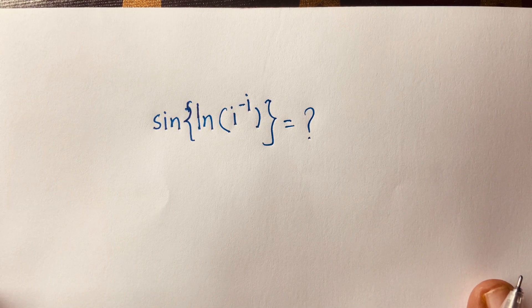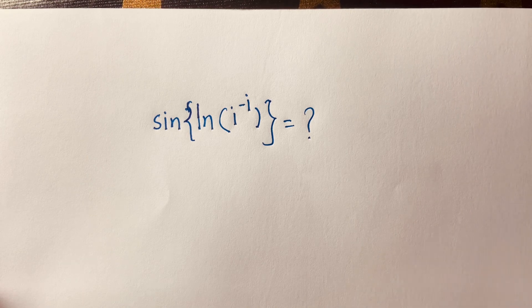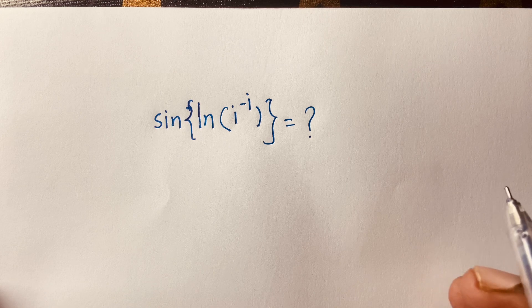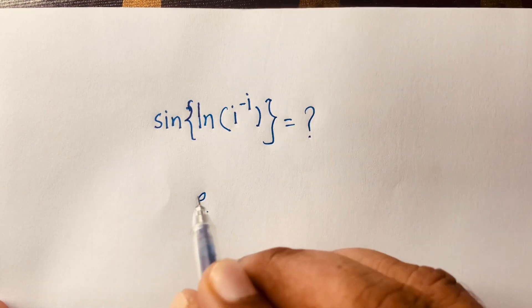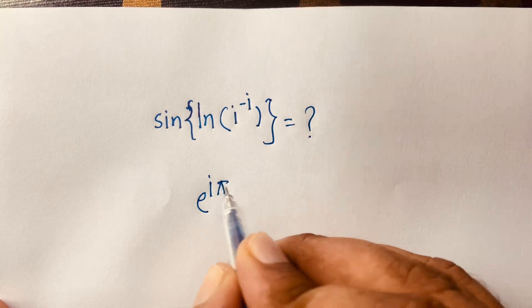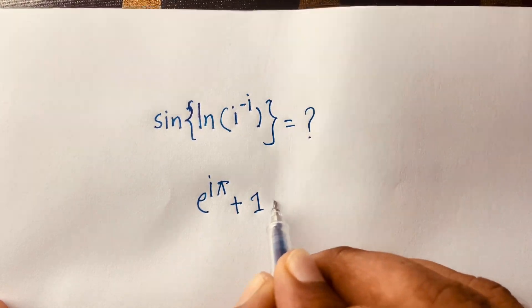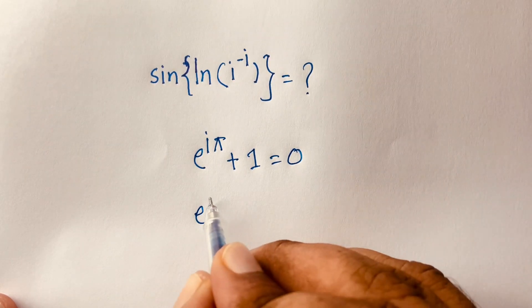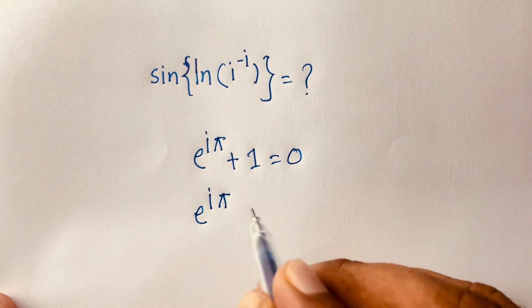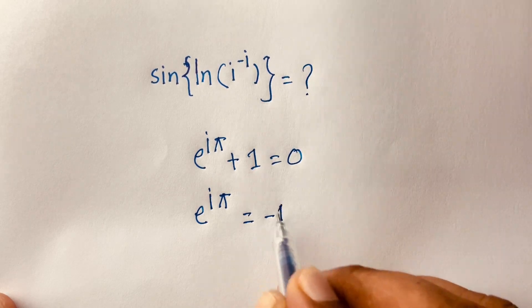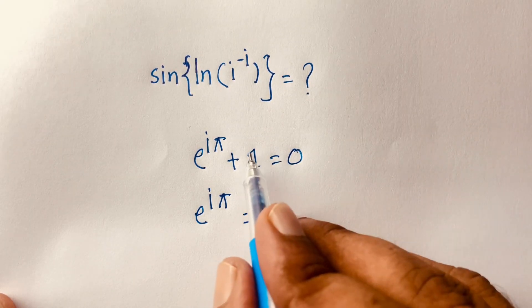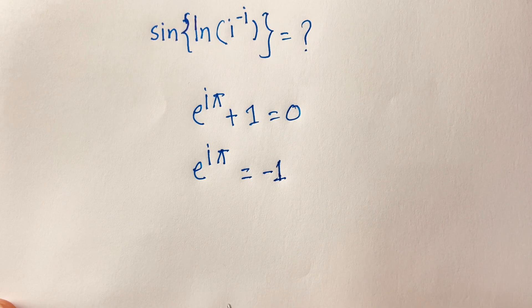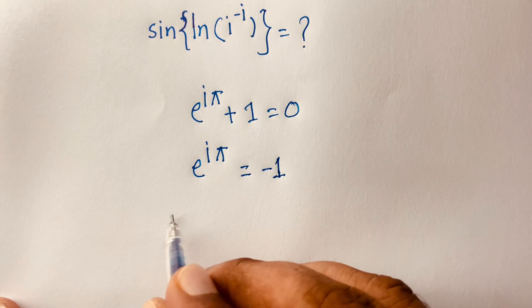To solve this question, first of all you need Euler's identity. You know that Euler's identity is e to the power i*pi plus 1 is equal to zero. From this, e to the power i*pi is equal to minus one — I just moved the one to the right side.